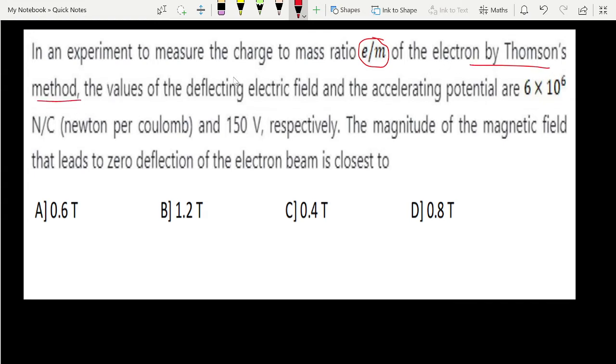We are measuring in that experiment the values of deflecting electric field and the accelerating potential are 6×10⁶ newton per coulomb and 150 volt. The accelerating potential here is 150 volt and the electric field is 6×10⁶ newton per coulomb. Okay, deflecting electric field and this is your potential V. This is E.